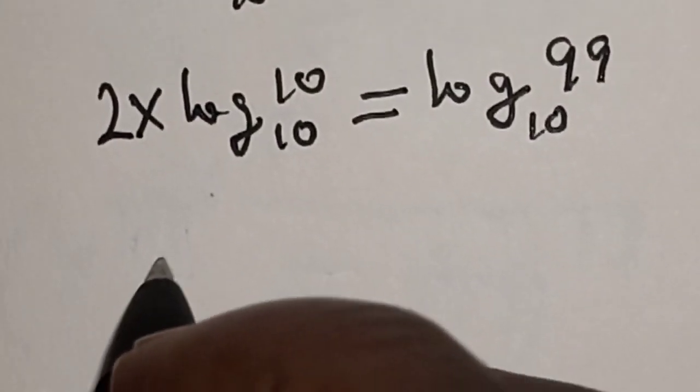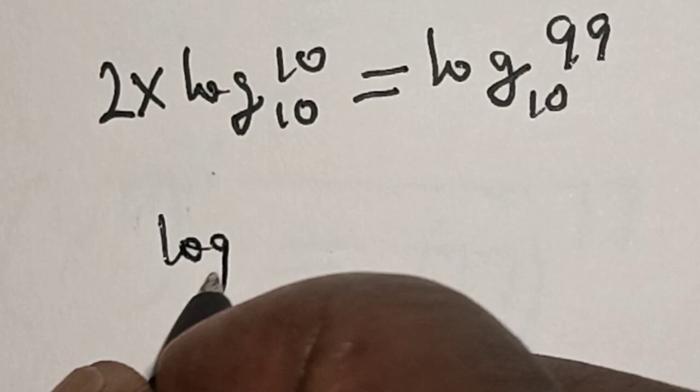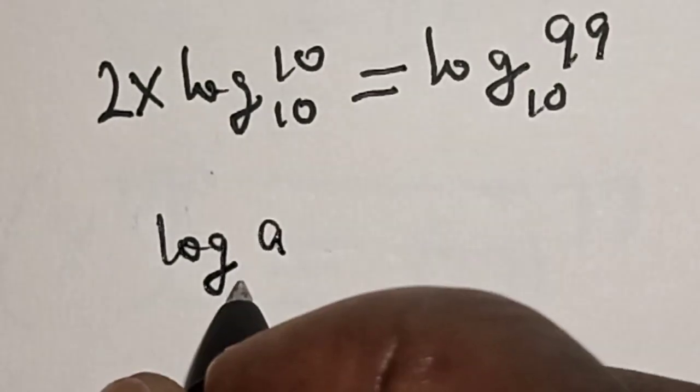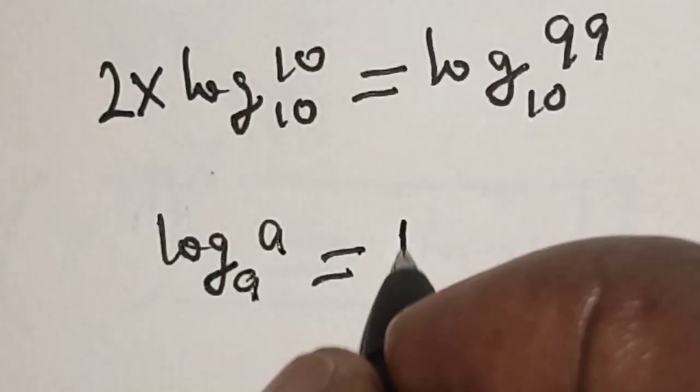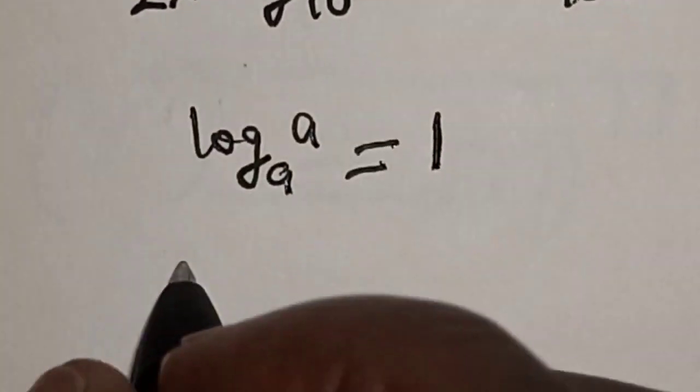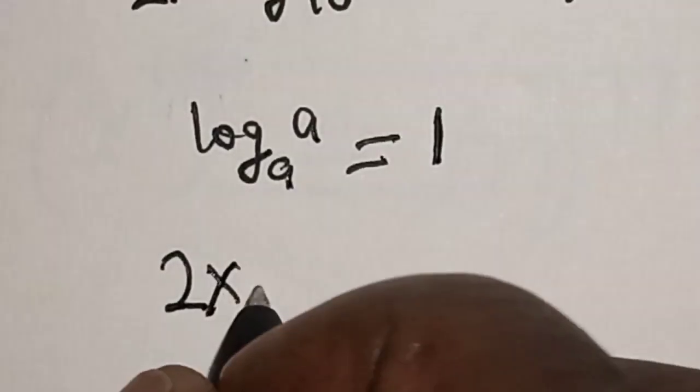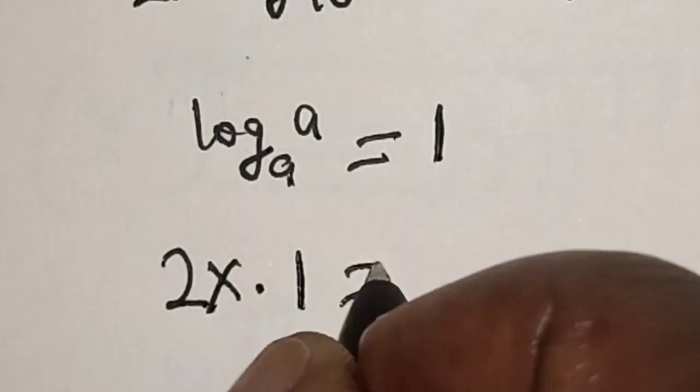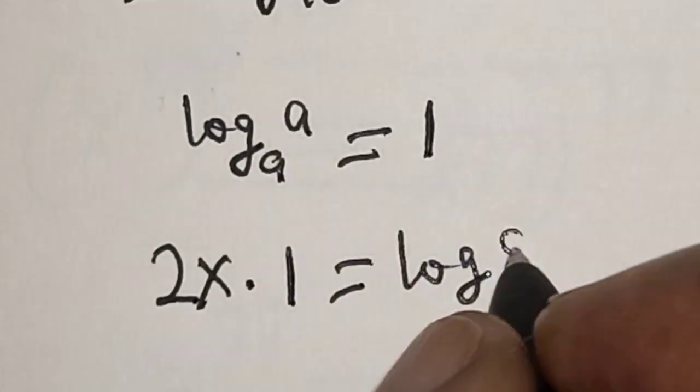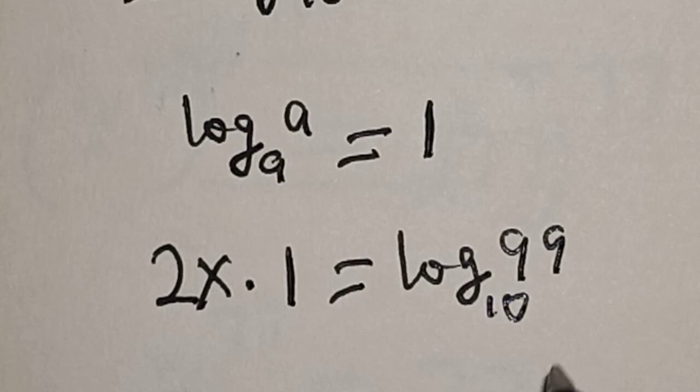Now, remember that if you have log a base a, this is equal to 1. So, 2x multiplied by 1 is equal to log 99 base 10.